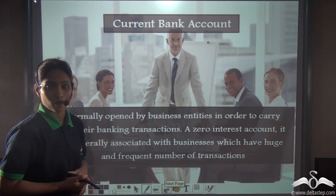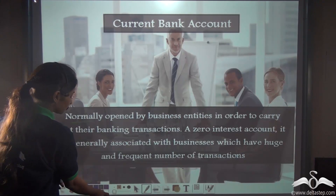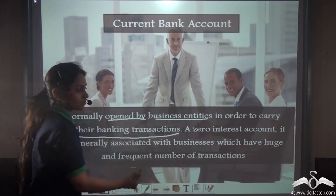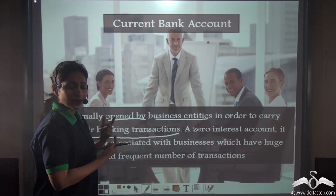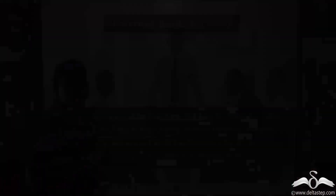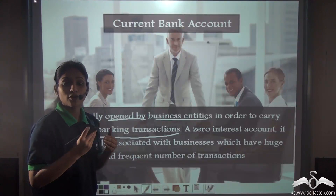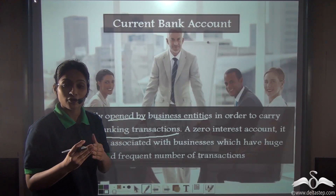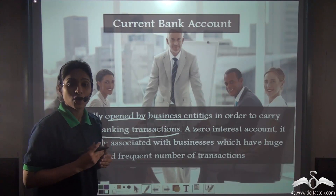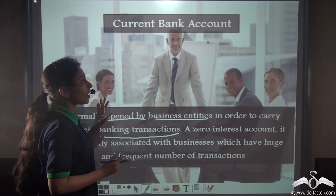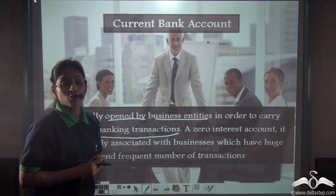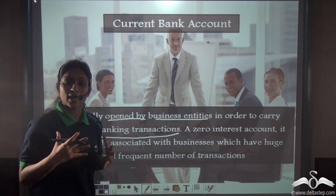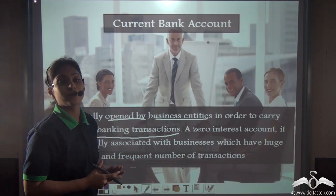The last one is the current bank account. It is normally opened by business entities in order to carry out their banking transactions. From the savings bank account, there is a limit on the number of withdrawal transactions you can make in a day, and also on the amount of withdrawals you can do in a day. A current bank account has no such limits — you can have any number of transactions in a day. Huge businesses have a lot of transactions in a day, so they use current bank accounts.